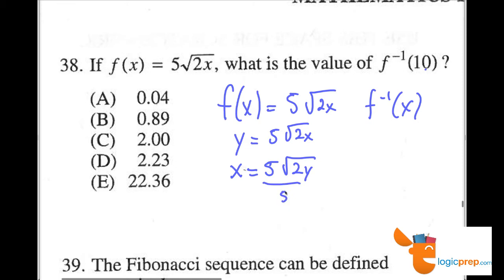First we would divide by 5, and then we would have x over 5 set equal to the square root of 2y. We'll square both sides to get rid of the radical.